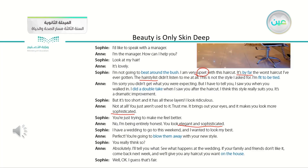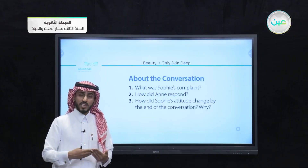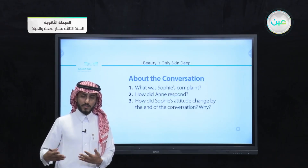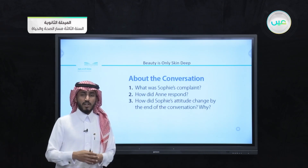We also have 'fit to be tied,' 'I did a double take,' 'blow them away,' and 'on the house.' We will talk about these expressions in the Real Talk part. Now let's look at the questions about the conversation. The first question is: what was Sophie's complaint? Number two: how did Anne respond? Number three: how did Sophie's attitude change by the end of the conversation and why? You can pause the video, go back to the conversation, listen again, and try to find the answers.